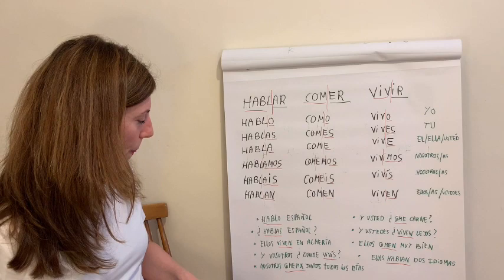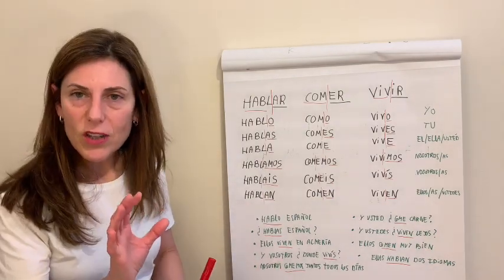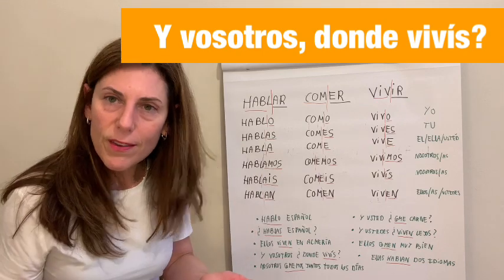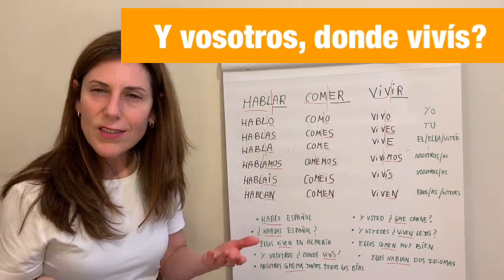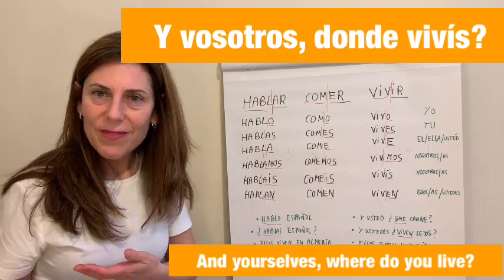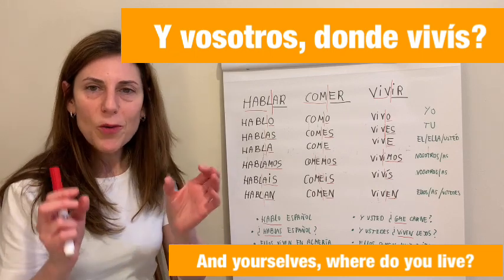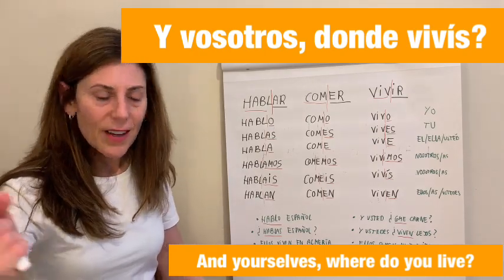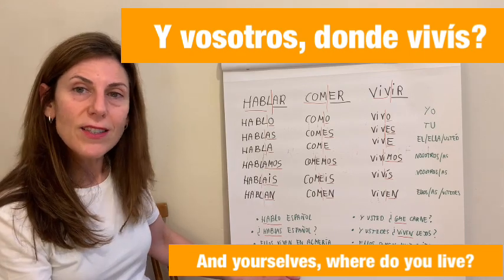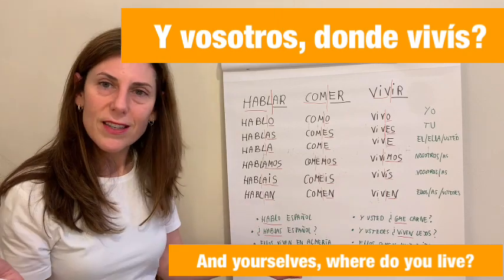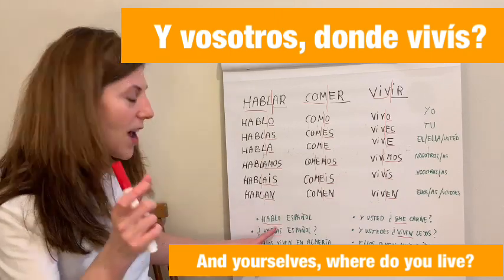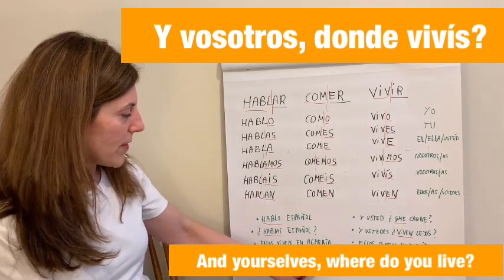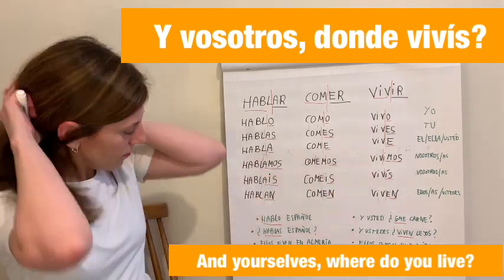This one is a question: '¿Y vosotros, dónde vivís?' That means 'And yourselves, where do you live?' In English it has so many words, but here just: '¿Y vosotros, dónde vivís?' With just two key words, a lot of information. And this 'vivís' comes from the vosotros form.